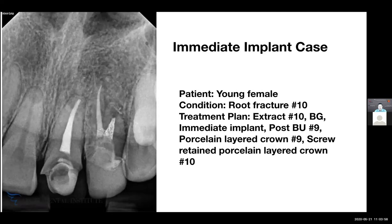I'll start with an anterior immediate case I've done in the past. A young female patient came in with a root fracture of tooth number 10. She was referred to us and our treatment plan was to extract number 10, perform bone grafting and immediate implant placement, do a post buildup on tooth number 9, and place porcelain-layered crowns on both teeth 9 and 10, with a screw-retained restoration on the implant at number 10.